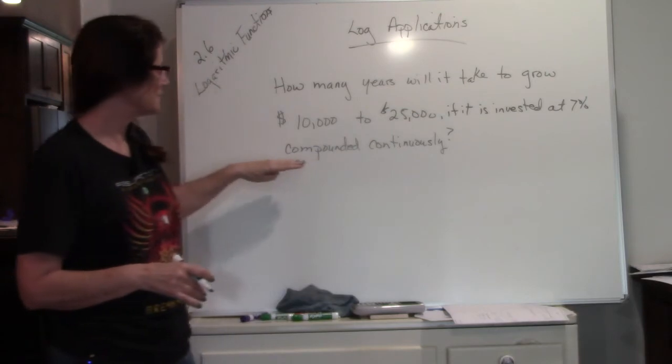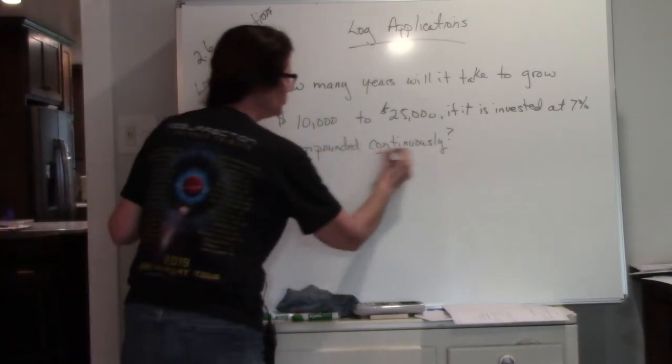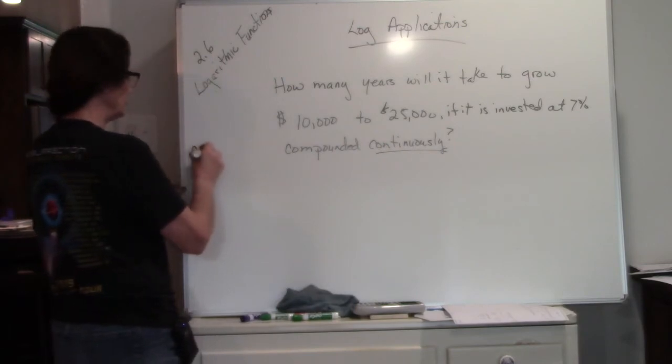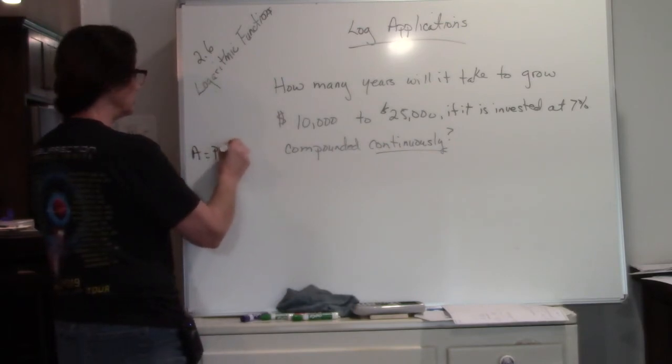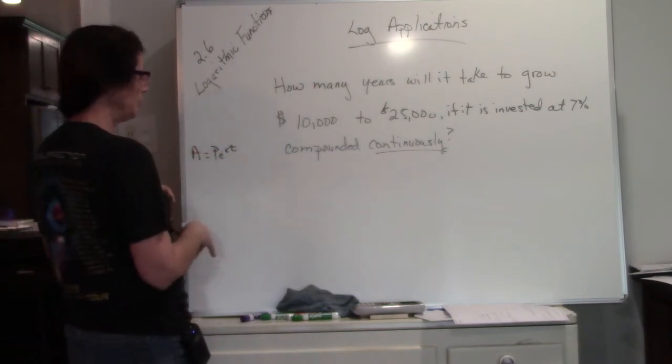If it's invested at 7% compounded continuously, remember when you see the term continuously, you're going to use your PERT equation. That's your formula. We're going to plug the values in where they belong.